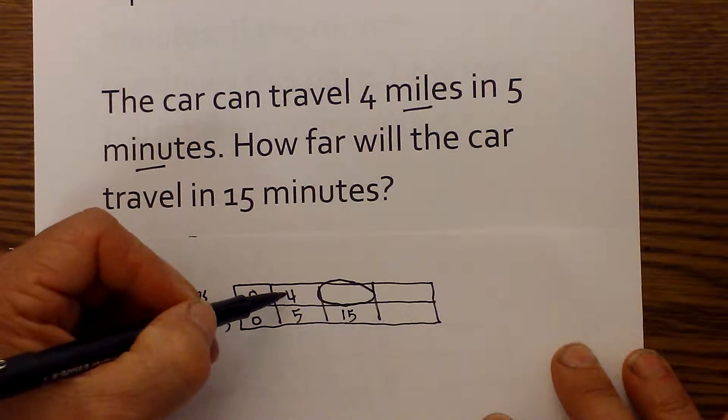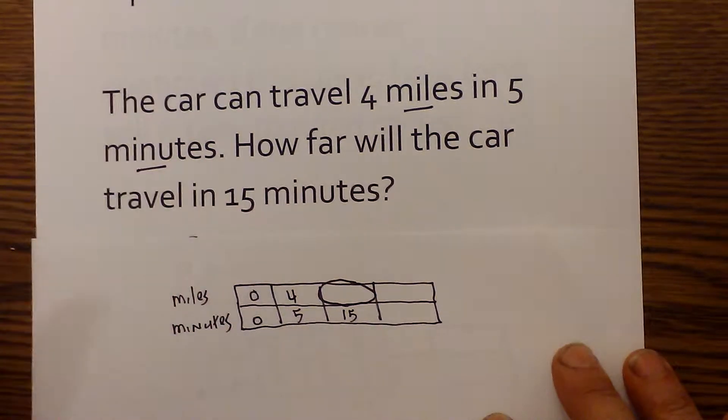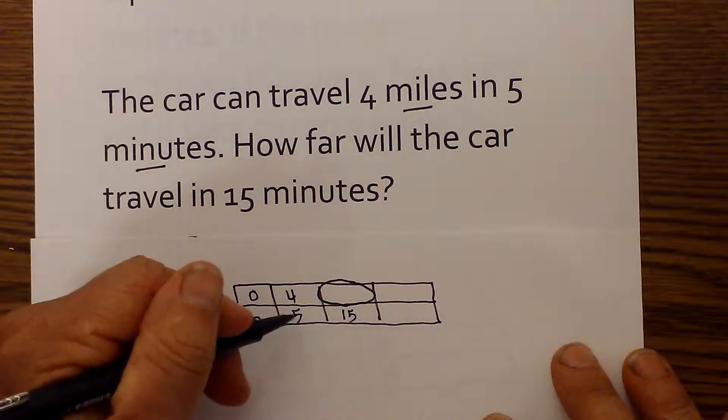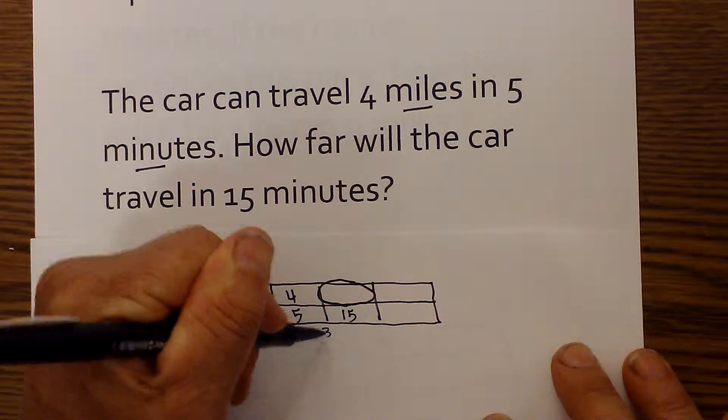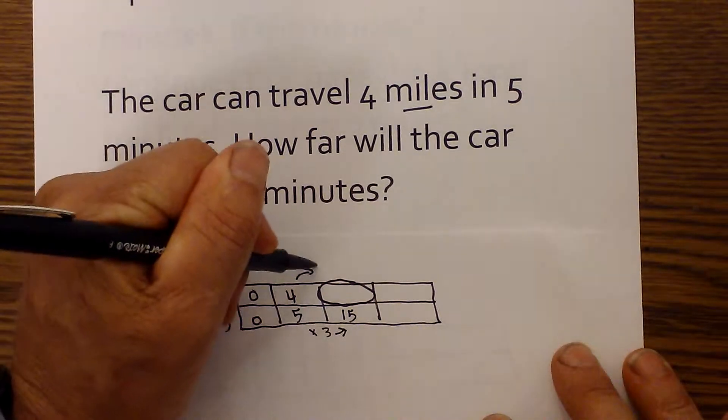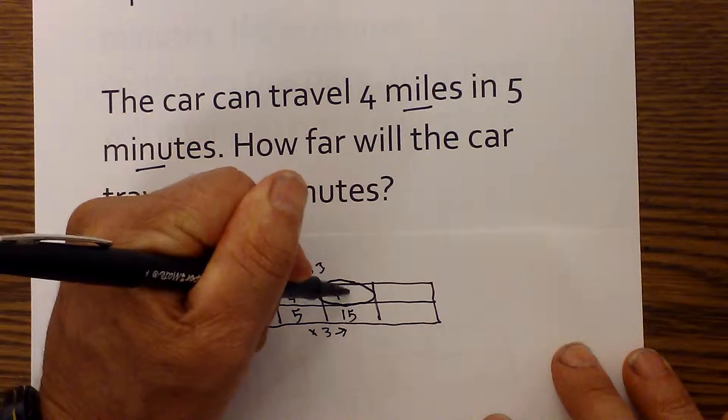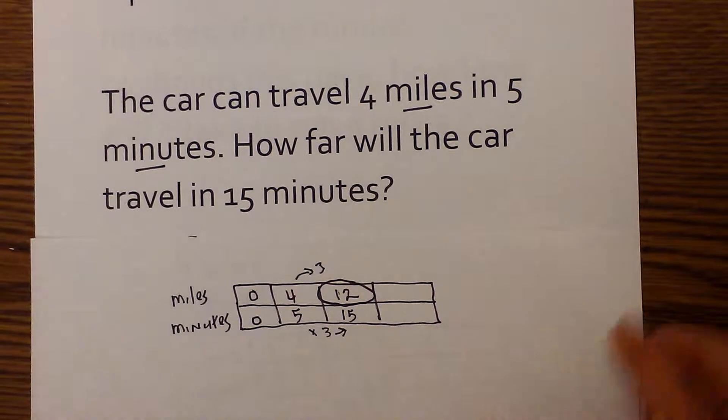Next, remember what you do to the top you also have to complete to the bottom or what you do to the bottom you have to do to the top. So 15 divided by 5 is 3. So I will multiply 5 times 3 to equal 15. So I need to do the same. 4 times 3 is equal to 12. And so you will travel 12 miles in 15 minutes.